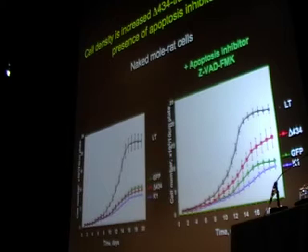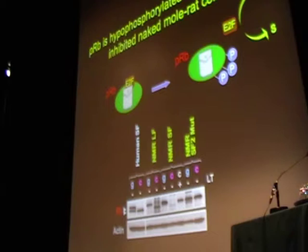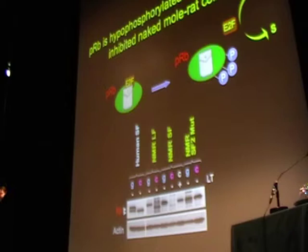We believe RB is really important for all of these regulations and we have to check the status of RB in naked mole rat cells. As a short reminder, RB exists in two stages: active RB will bind E2F, a transcriptional factor, and take the cells out of the cell cycle into the cell cycle rest stage. When RB is phosphorylated, it is in the inactive stage, E2F is released, and the cells go into the cell cycle.